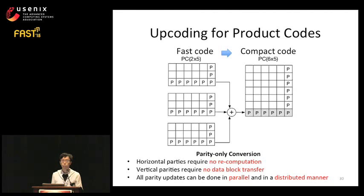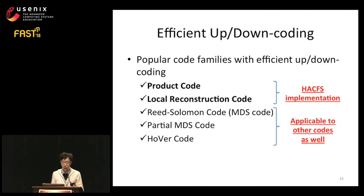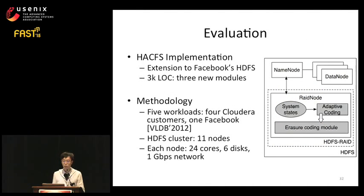We have implemented HackFS with two codes: the product code and the local reconstruction code. We also developed efficient up- and downcoding operations for three other popular codes. For evaluation, we implement HackFS on top of Facebook's HDFS with three key modules: one to monitor file system state, one implementing the adaptive coding state machine, and one providing coding support for product code and LRC. We evaluate our system with five workloads—four from Cloudera customers and one from Facebook—on a cluster of 11 nodes.